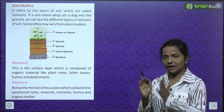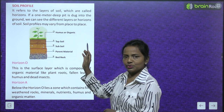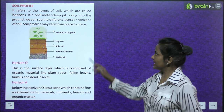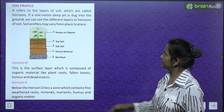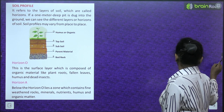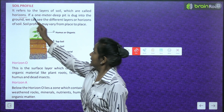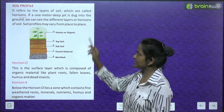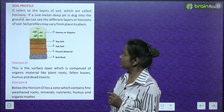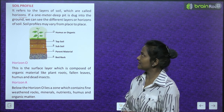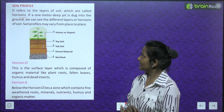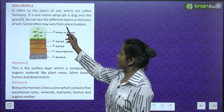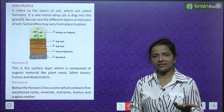Soil profile refers to the layers of soil, which are called horizons. If a one-meter deep pit is dug into the ground, we can see the different layers or horizons of soil. Soil profiles may vary from place to place.